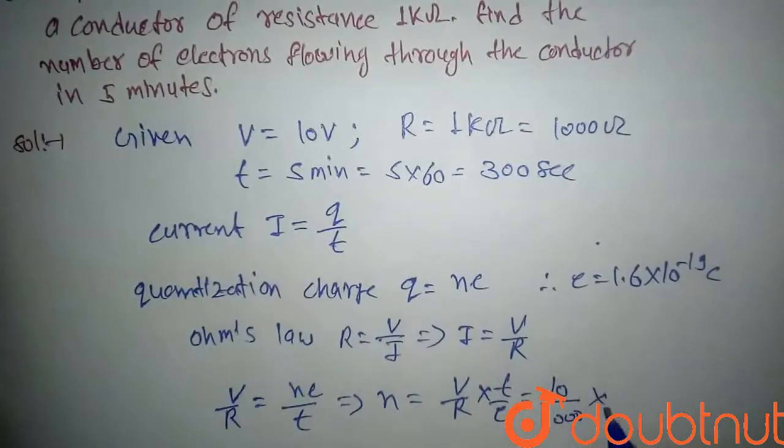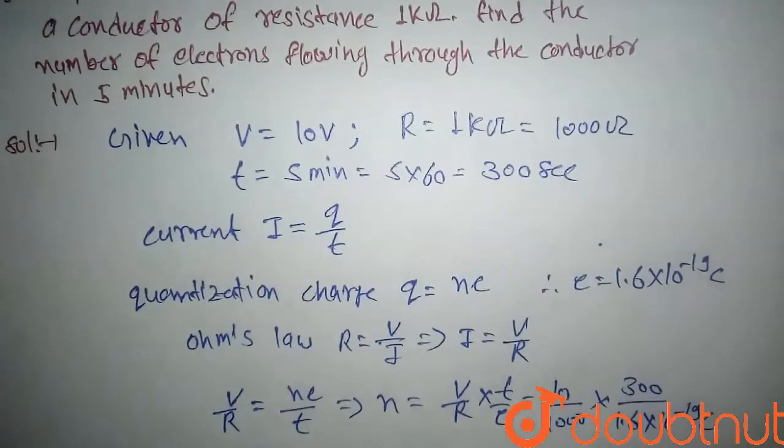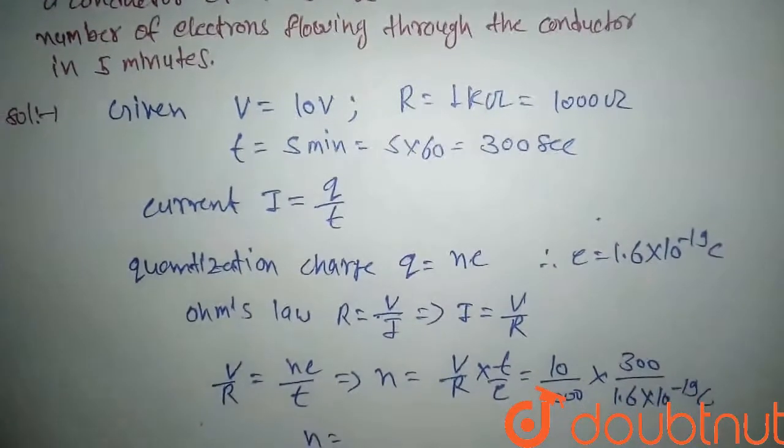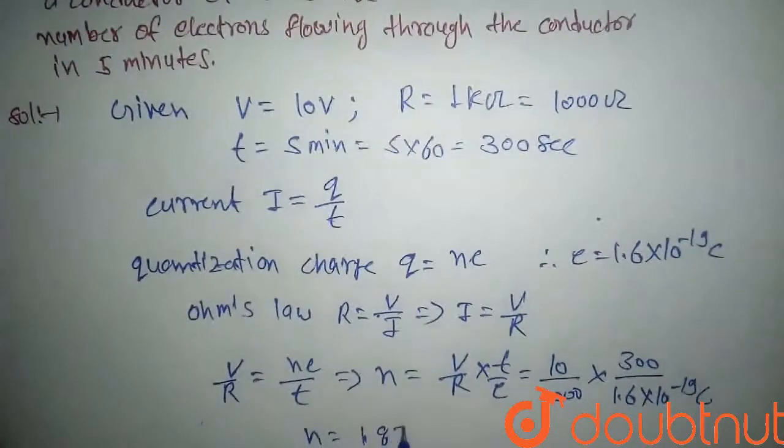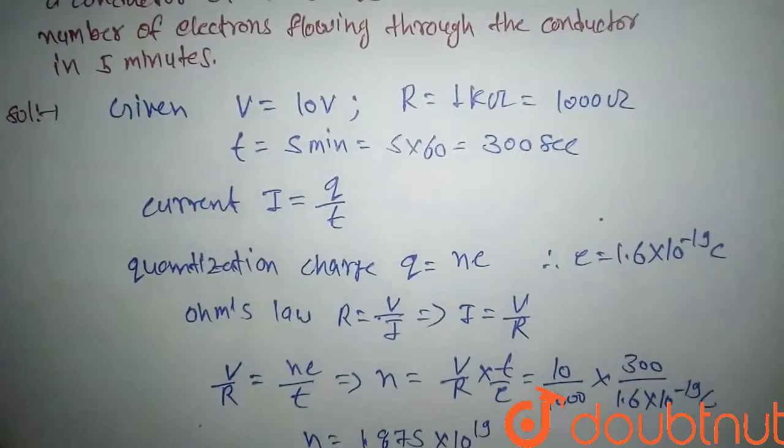And also we have time 300, and the electron charge is 1.6 × 10^-19 coulomb. So if we solve, the number of electrons n comes out to be 1.875 × 10^19.